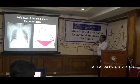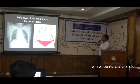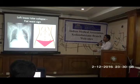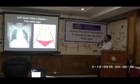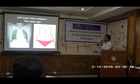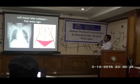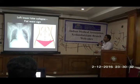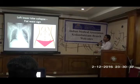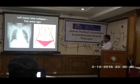Left lower lobe collapse has a sign called the flat waist sign. Normally you have a small angulation formed by the aortic knuckle with the pulmonary artery — that will be lost, leaving a straight border. This is called the flat waist sign, which is seen in left lower lobe collapse. In lower lobe collapse, you are again not seeing the diaphragm — there is loss of silhouette between the collapse and the diaphragm, so silhouette sign is positive.